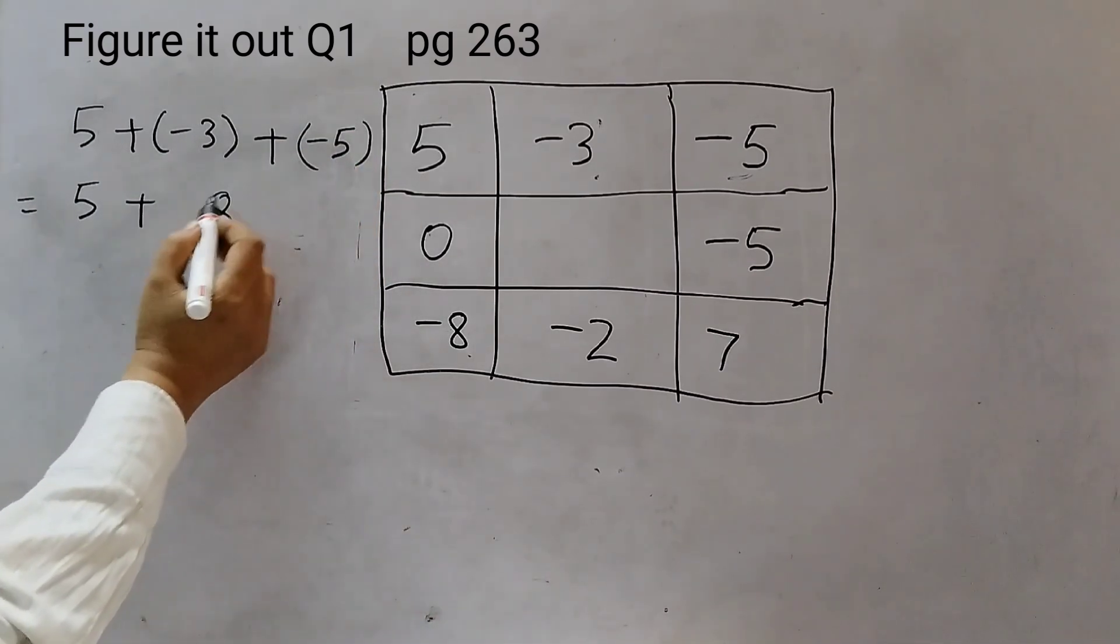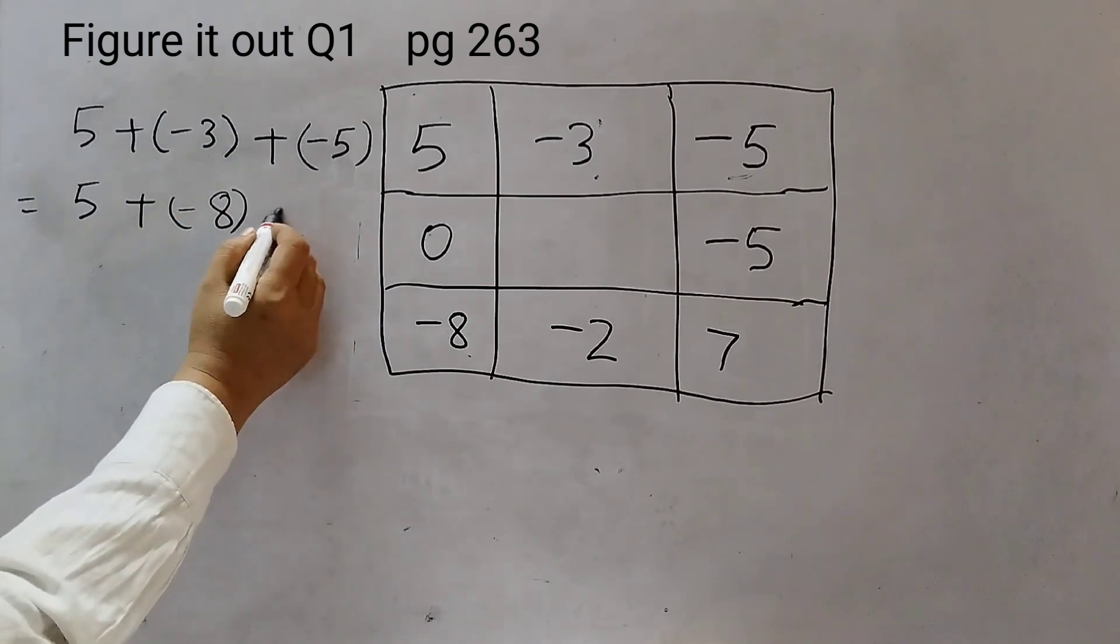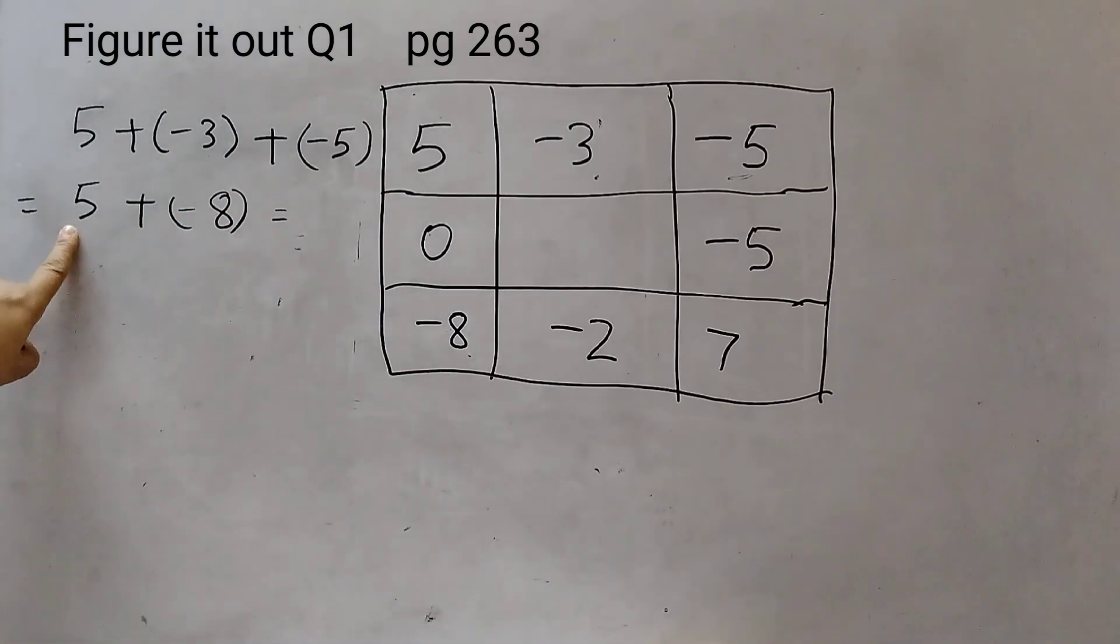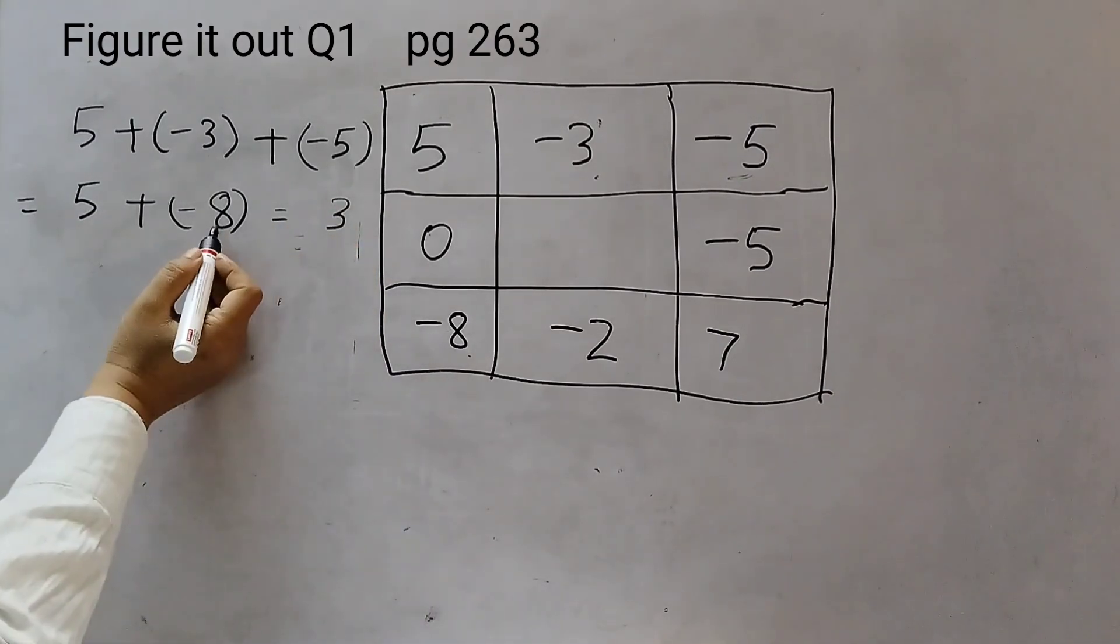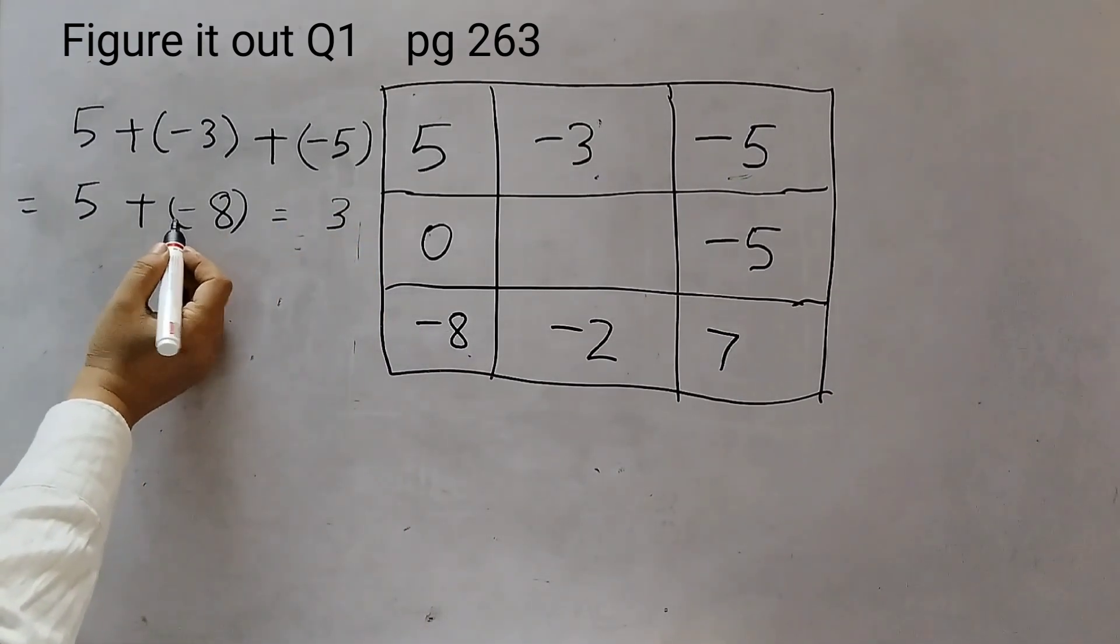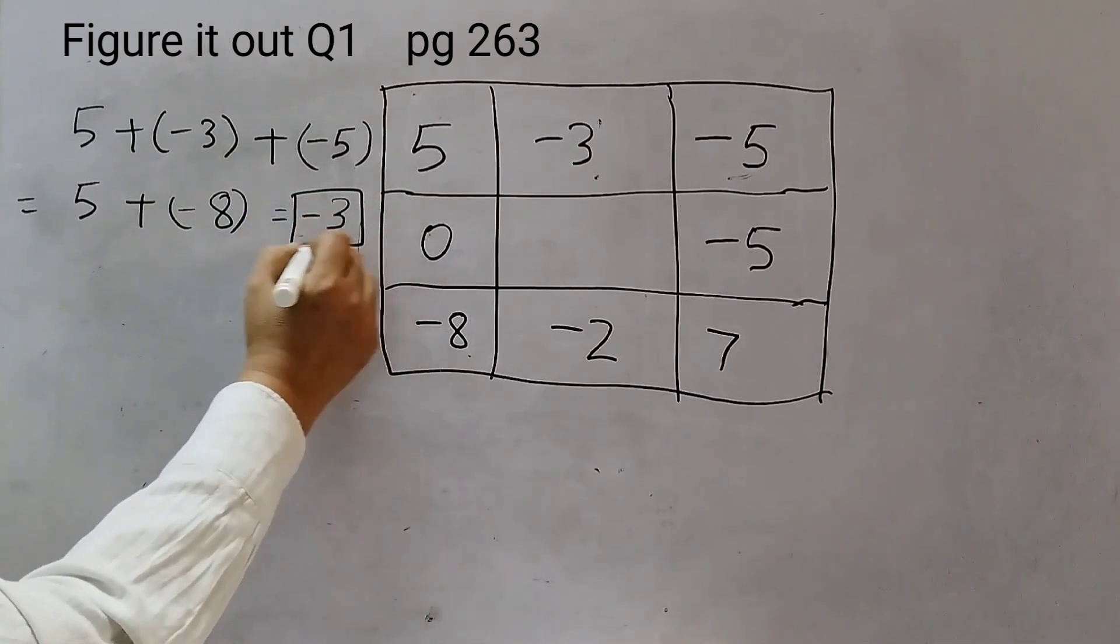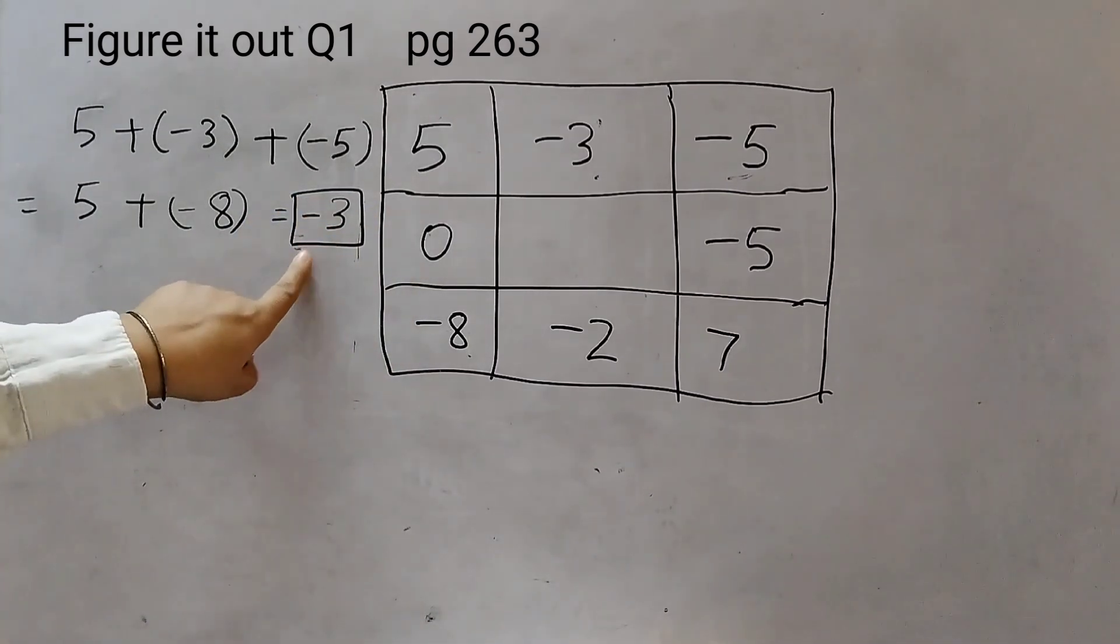5 plus minus 8. This is a positive number, this is a negative number. Whenever we add a positive number and a negative number, that means we need to find the difference. We need to subtract the number and take the sign of the bigger number. Like here, 5 and 8. 8 minus 5 is 3. And 8 is bigger, it has a minus sign. So, this will be minus 3.